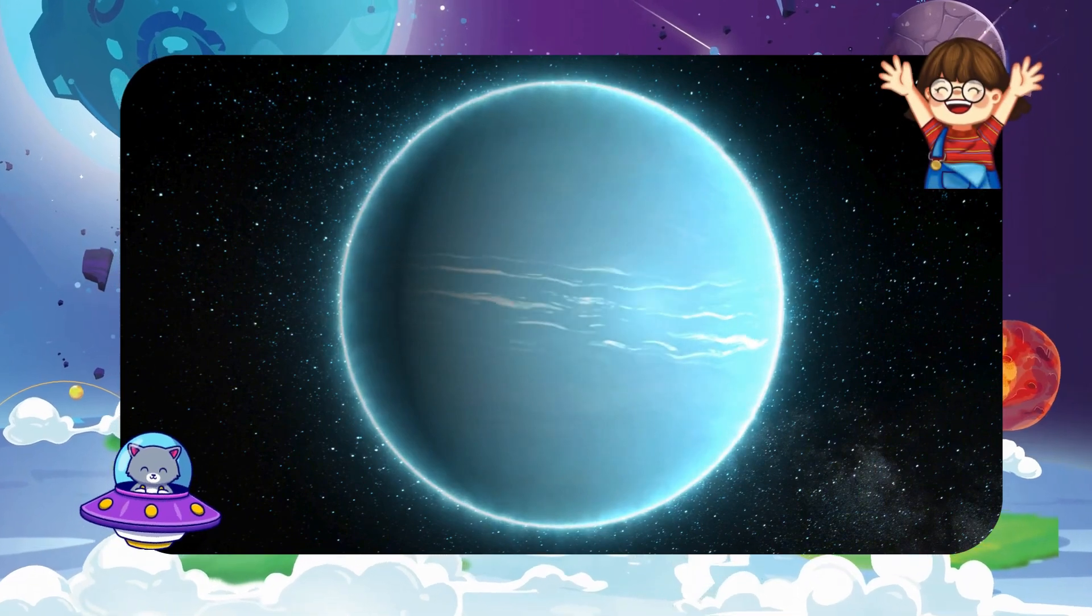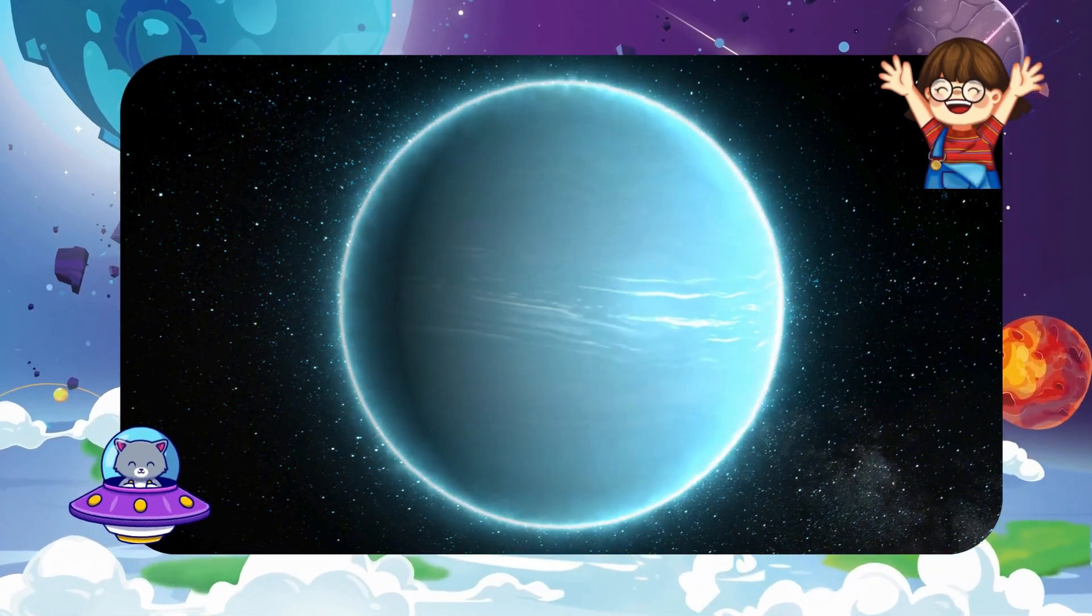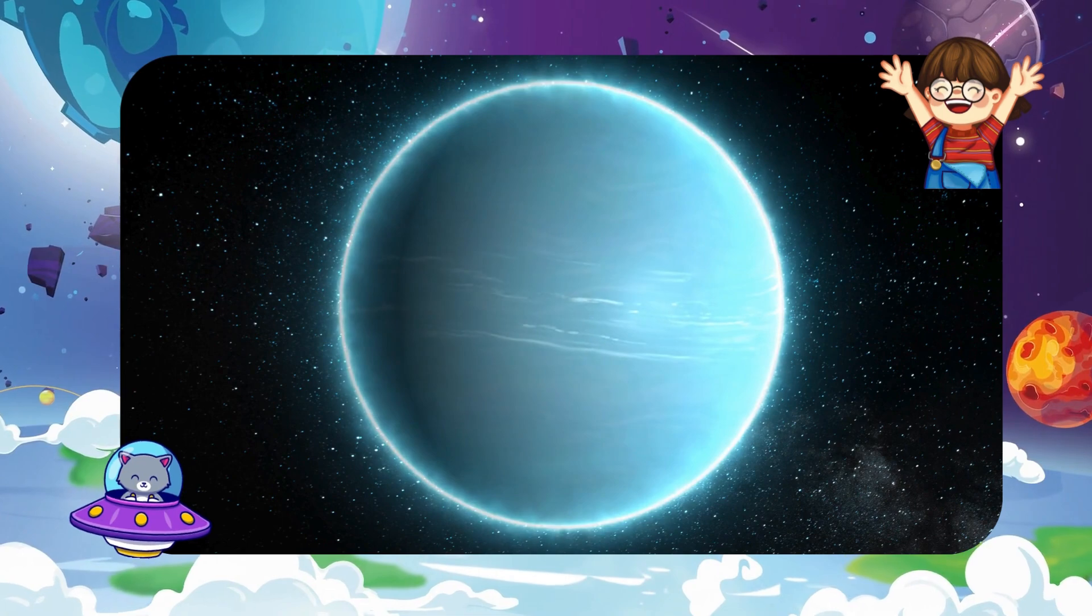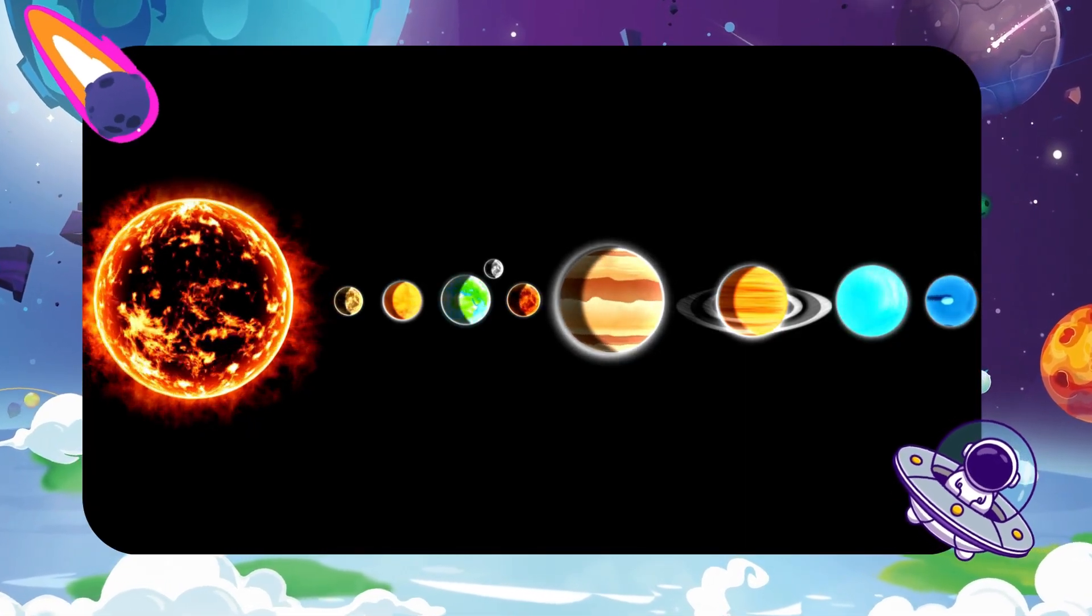The next is Uranus. Uranus is cold and spins on its side like a rolling ball. It's light blue and has faint rings and many moons.